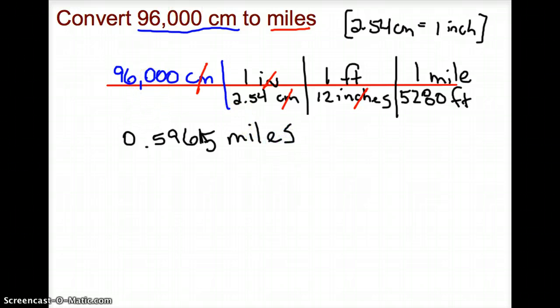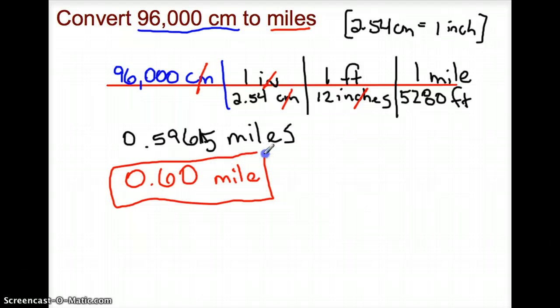However, I would want to deal with significance here, recognizing that there are two significant figures in 96,000. So I'm going to leave that as 0.60. That has two sig figs, so 0.60 miles. And that's it.